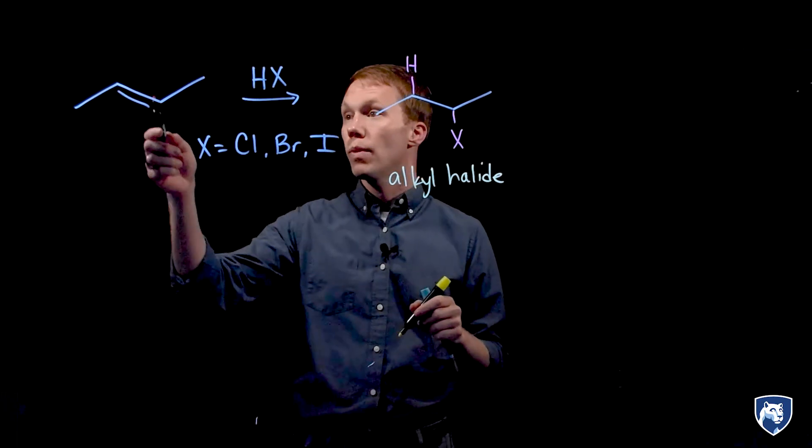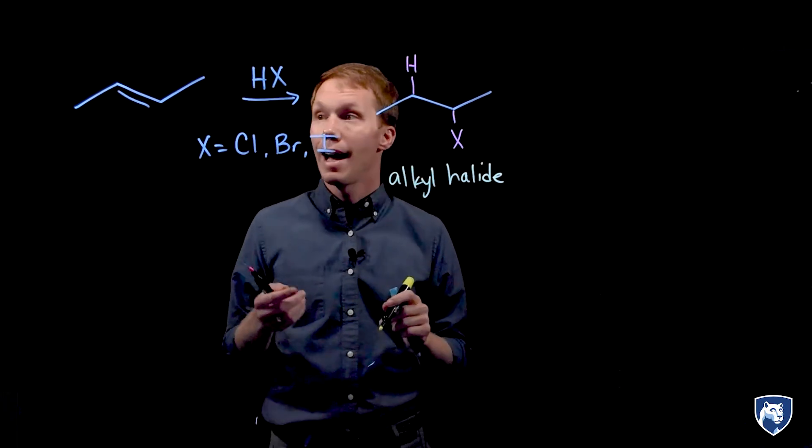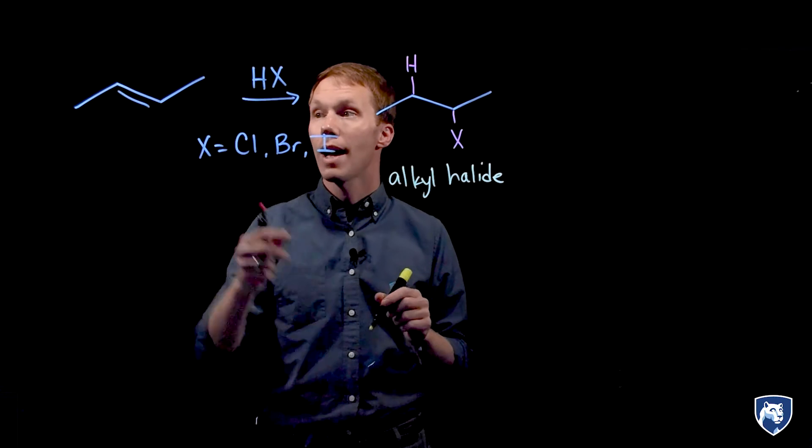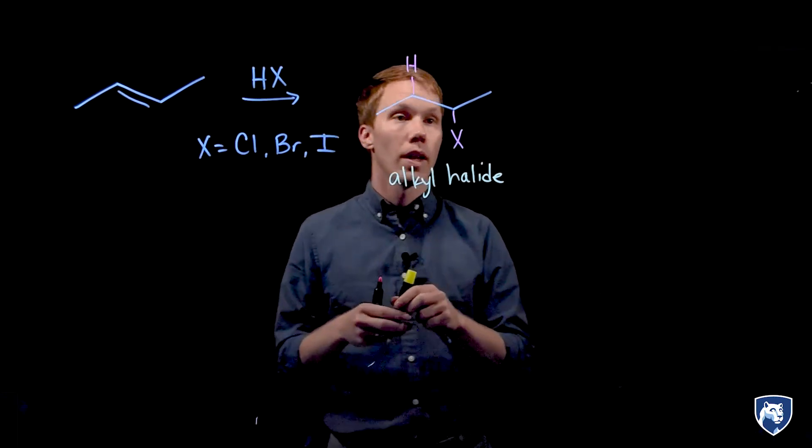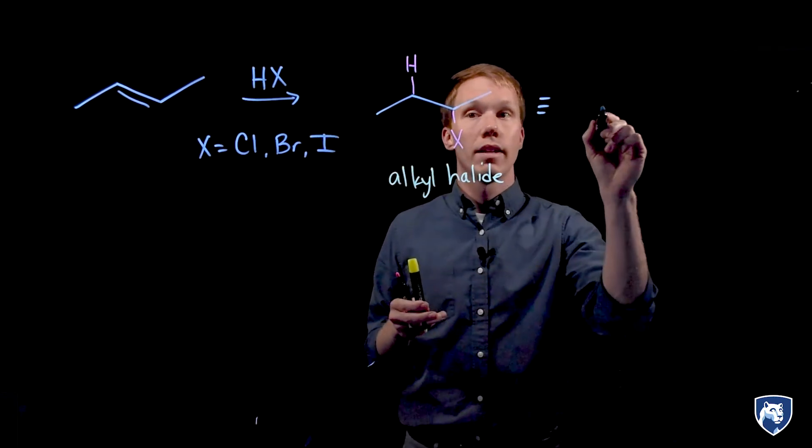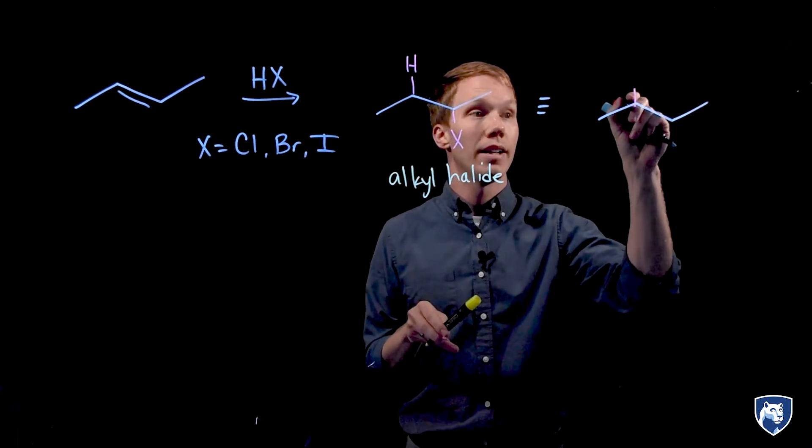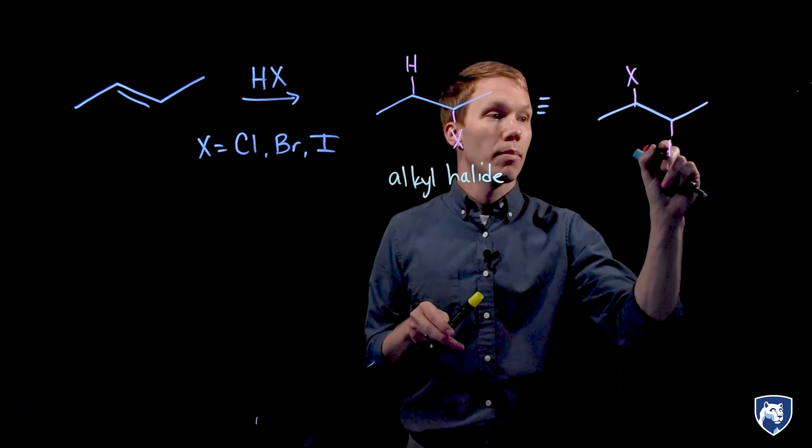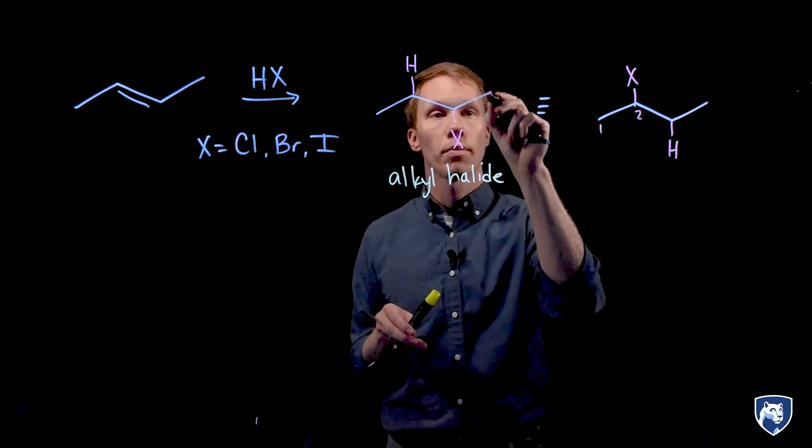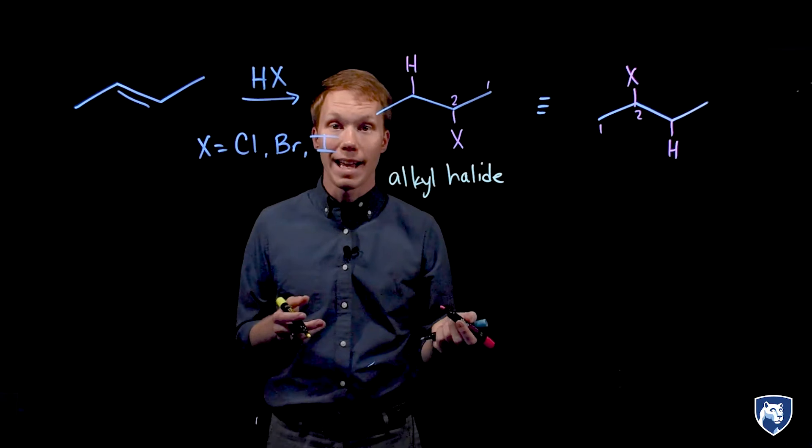In this particular example, we're starting with a symmetrical alkene, where the two sides of the double bond are identical. And that means that regardless of how these two atoms add, we're going to get the same product. Both of these products are a two-halo alkene.